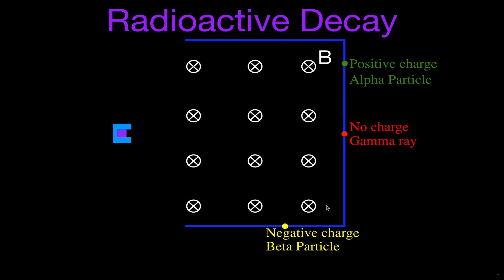So we have alpha, beta, and gamma — the first three letters of the Greek alphabet — and they are now known as alpha decay, beta decay, and gamma decay, and we're going to go through all three of those.